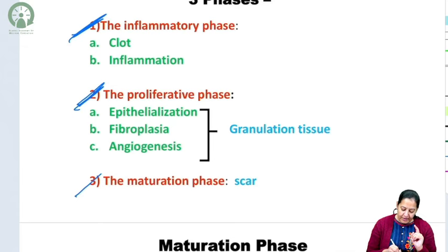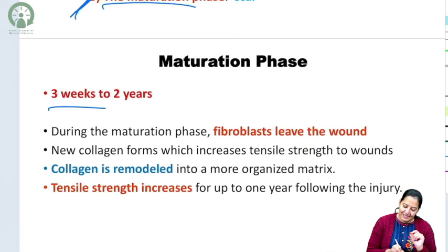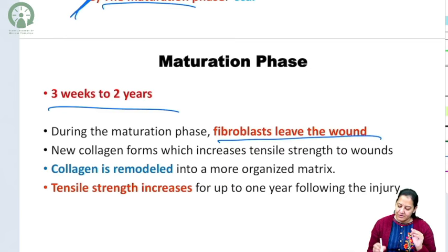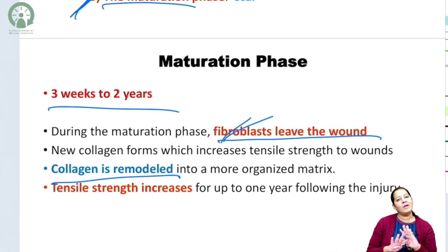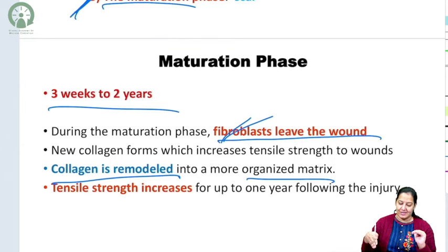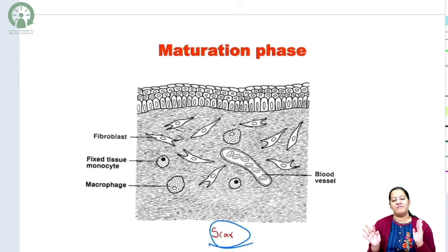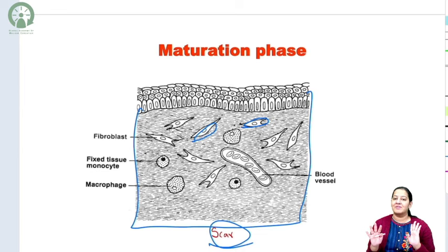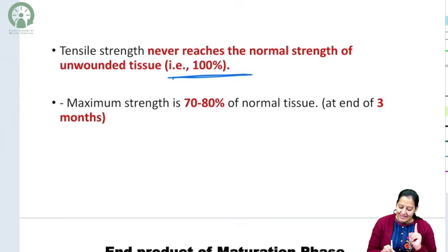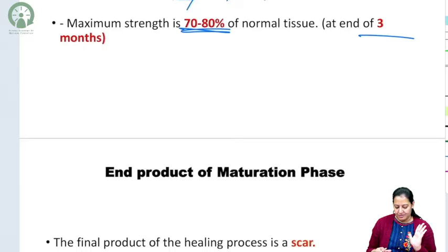Phase three is the maturation phase, starting from three weeks onwards and lasting up to two years — it is the longest phase. Fibroblasts leave the wound, followed by neutrophils and macrophages until only collagen remains, now in an organized matrix. The tensile strength of the wound keeps increasing up to one year, reaching a maximum of about 80% after three months, but never reaching 100%. The end result of the maturation phase is the scar.